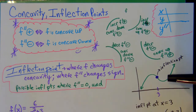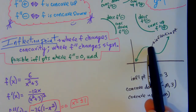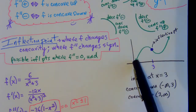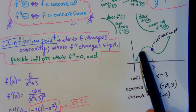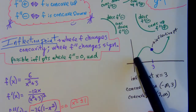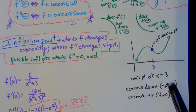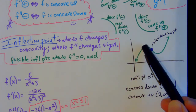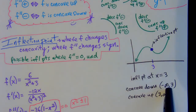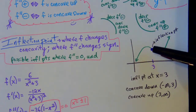An inflection point is where the graph changes concavity. Looking at this graph, there's an inflection point because to the left of x = 3, the graph is spilling water — concave down — meaning from negative infinity to x = 3 the second derivative is negative. To the right of that point, the graph is holding water and is concave up, which is why that's an inflection point.